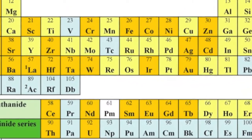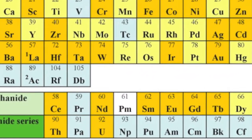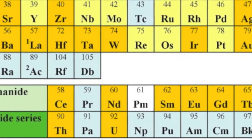Uranium, element number 92, is shown on a modern periodic table.